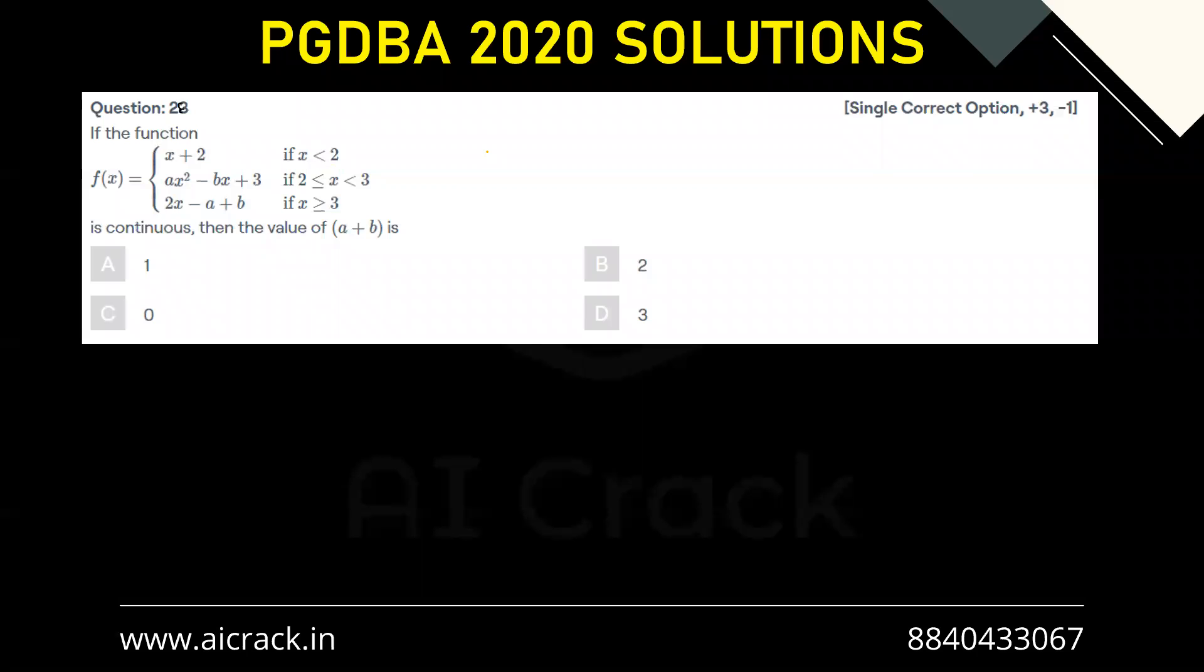The critical points over here are x equals to 2 and x equals to 3, so we have to check continuity at x equals 2 and x equals to 3.